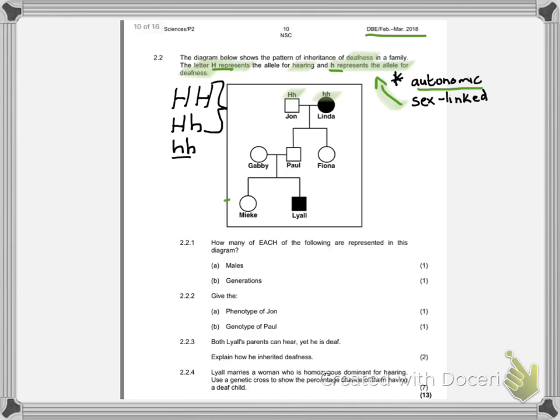If we look at our diagram, we can see that Linda has two small letters and she's colored in. There is no key, but I'd like you to know that whenever you see a colored in circle or square, it means they have the disorder. That means anybody on the sheet that is colored in will have two lowercase Hs. So I'm going to go down to Lyle and add in the two lowercase Hs because we know for certain he is deaf.